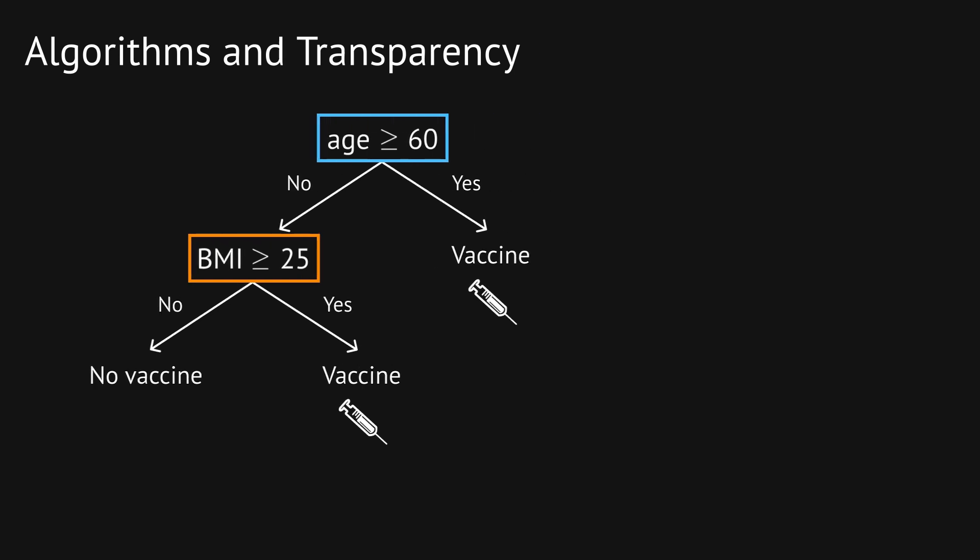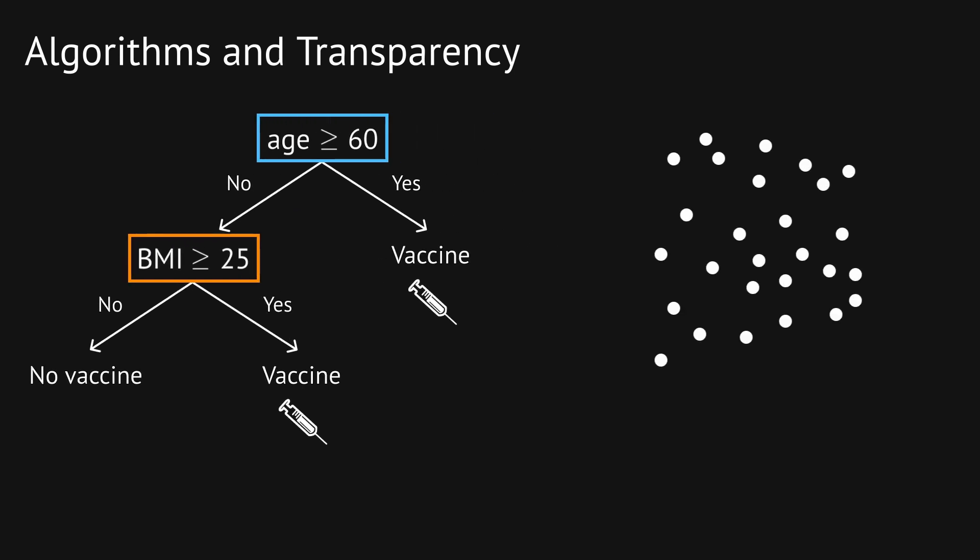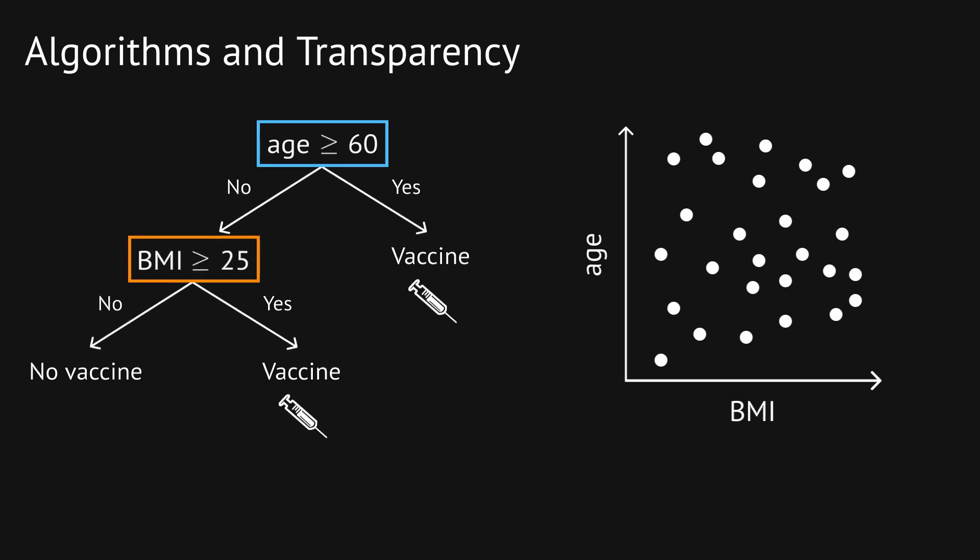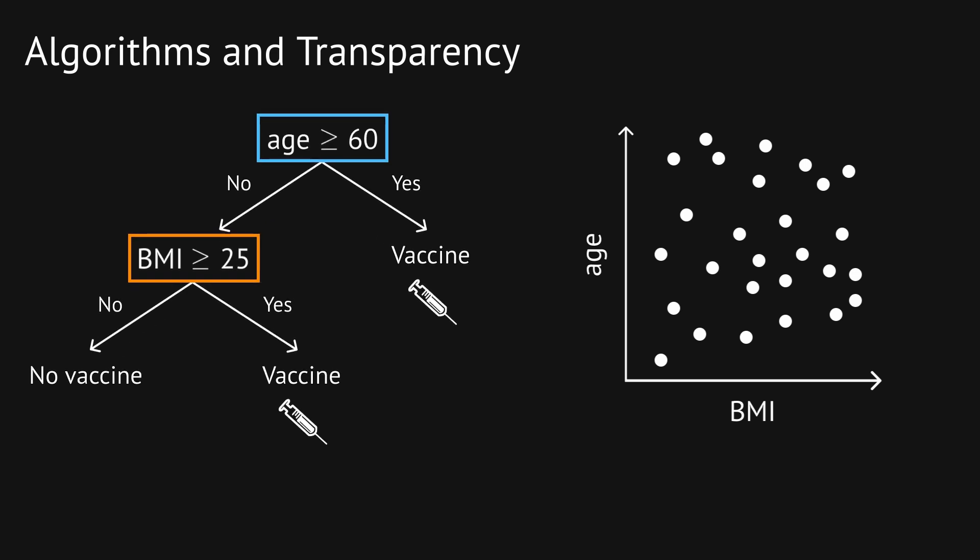To see an example, these points represent people organized by age and BMI. Let's split them into groups with the decision tree. First, separate the people who are at least 60, then split off those with a high BMI. This forms three groups, and for each point, we have a transparent explanation of why it ended up in its group, which helps build trust in the algorithm.